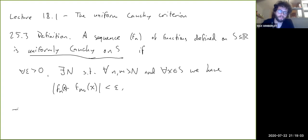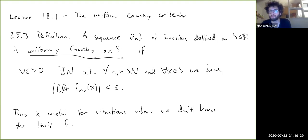So one of the main uses of this is for situations where we don't know the limit f. Just like with normal sequences of numbers, it was helpful to know that Cauchy sequences of numbers converge, because if you don't have a nice way of expressing the value of the limit, then you can still show that a sequence is Cauchy and know that it converges to some number. That can actually be a useful way to define certain numbers.